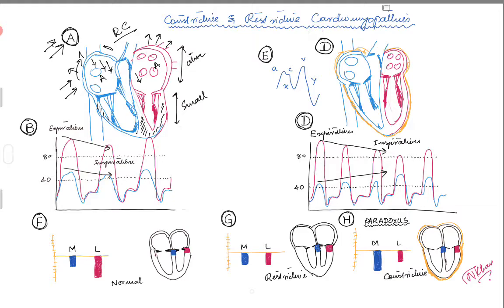There are many things that can cause constrictive pericarditis — it can be idiopathic, infectious, or post-operative. Patients who have CABG and then develop pericarditis can develop this constrictive physiology or constrictive cardiomyopathy. Let's look at the waveforms in the cardiac catheterization lab that can help us distinguish between constrictive and restrictive cardiomyopathy.